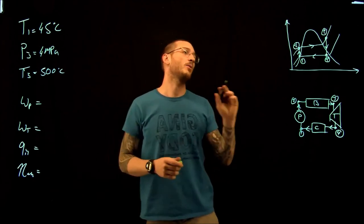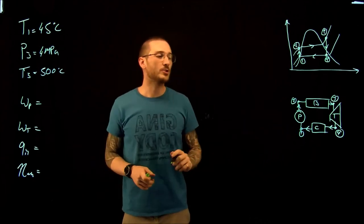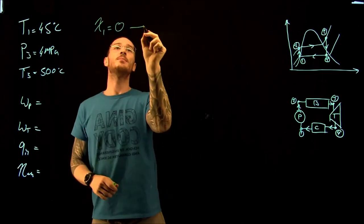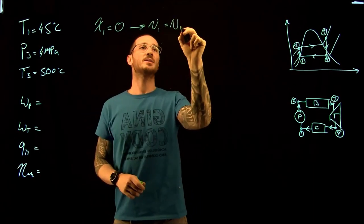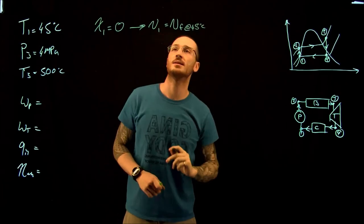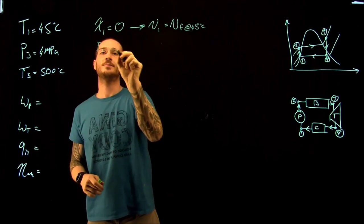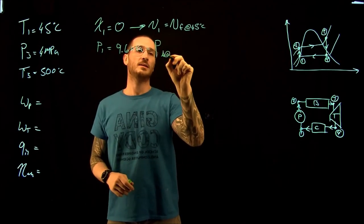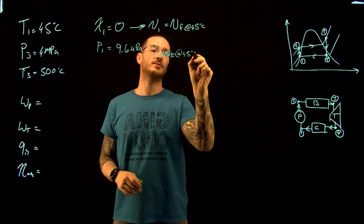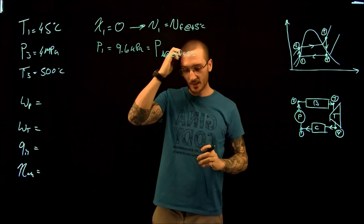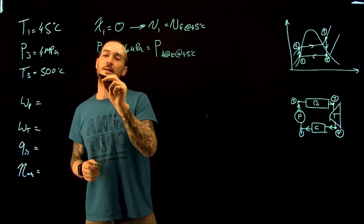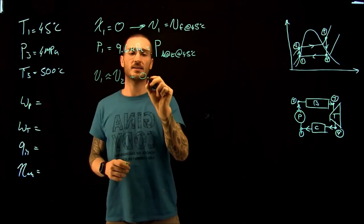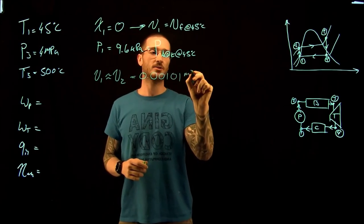The first thing we're going to look at is the work of the pump. We're assuming that at point one we have saturated liquid, so the quality at point one equals zero, meaning the specific volume at point one is the specific volume of the fluid at 45°C. This also means P₁ = 9.6 kPa, the pressure of saturated mixture at 45°C. We also assume the specific volume at point one is approximately equal to the specific volume at point two, which from the tables is 0.00101 m³/kg.